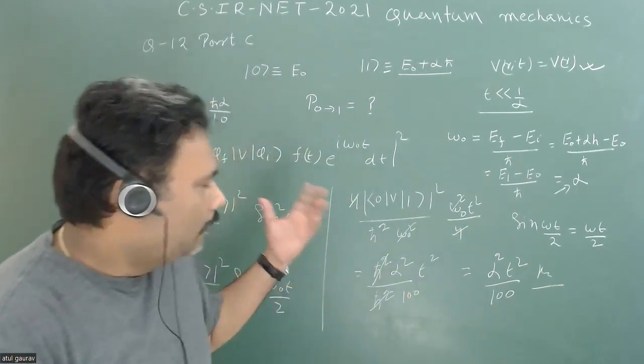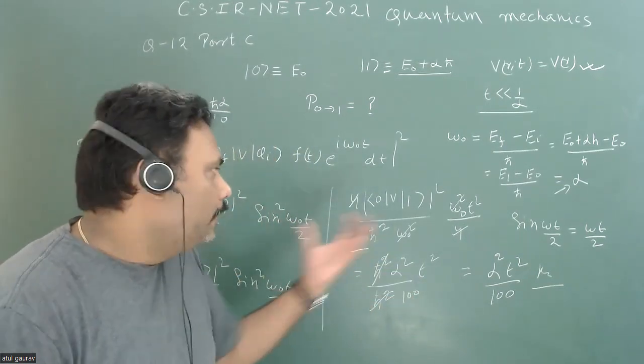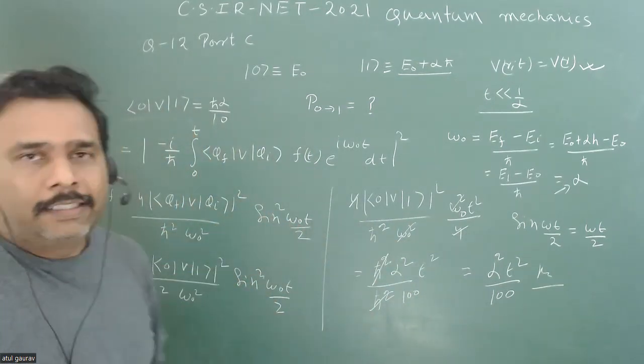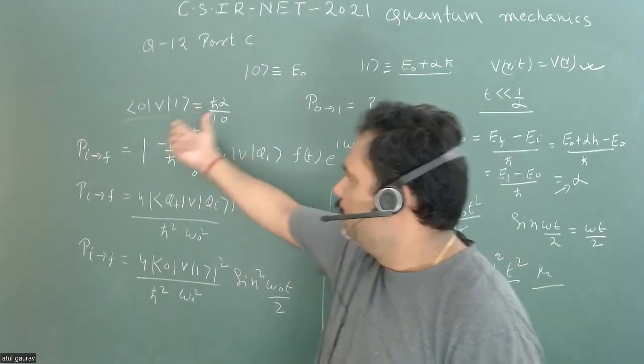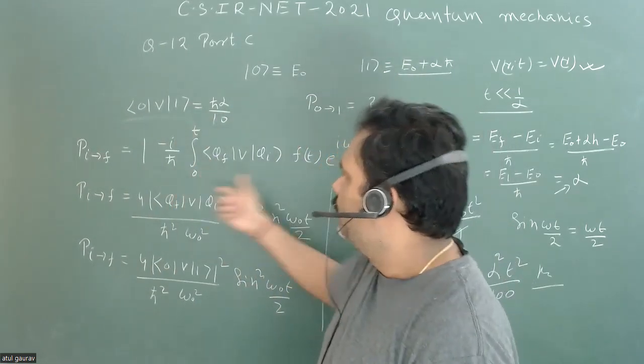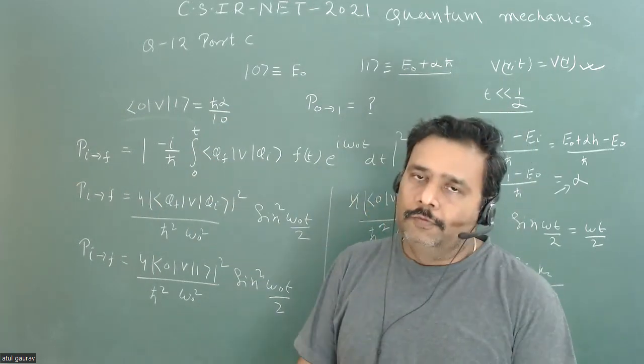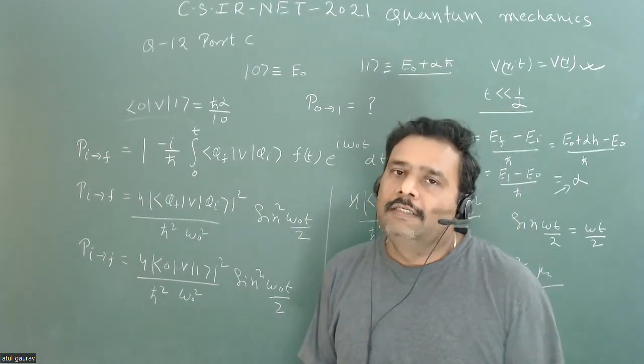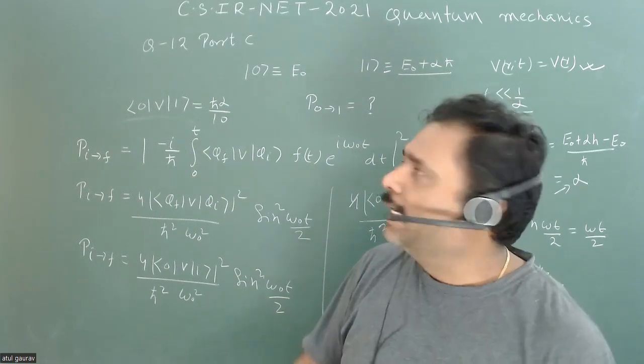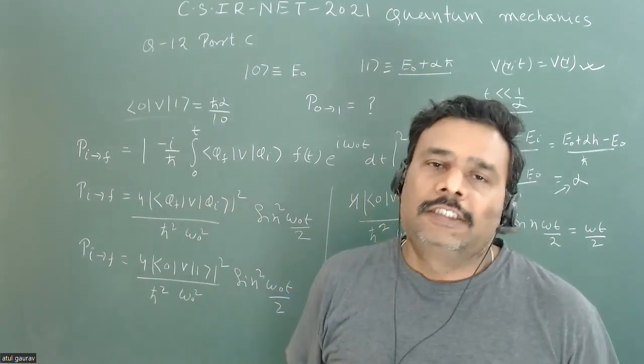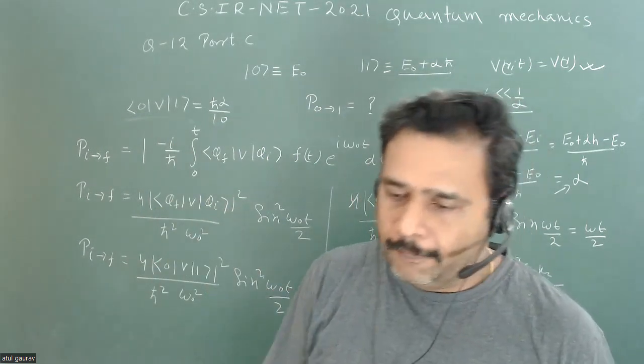So this will be the answer. This is a straightforward question if you know the concept, because there is not any complicated calculation or integration, but every concept is there. You have to take care of how this particular formula can be reduced to different forms and where you can use that. This is a very wonderful problem to understand transition probability between one state to another state when you impose some potential on a system.